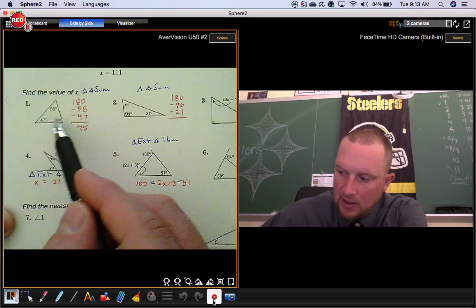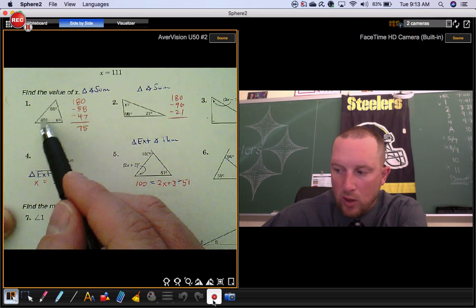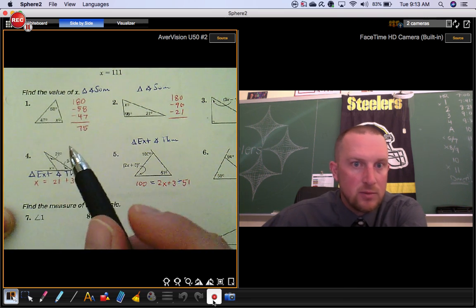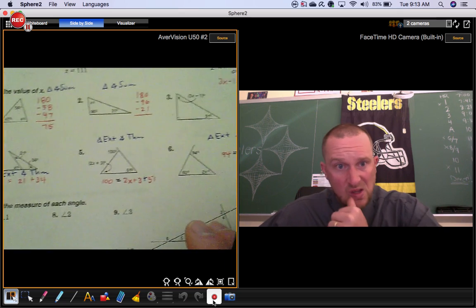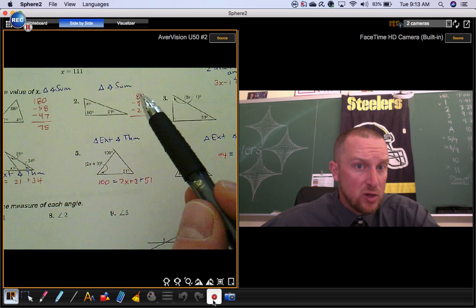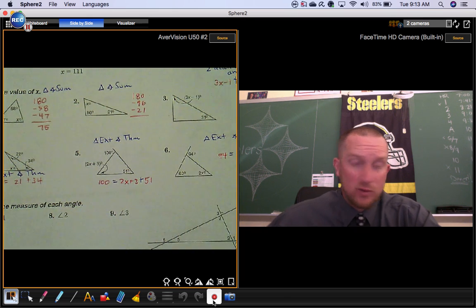You could then classify this triangle if you wanted to. Notice how all of the angles are acute and they're all different, so it would be acute scalene. For number two, we're going to do the same exact thing—triangle angle sum theorem. Start with 180 degrees and take away the two angles that you have.